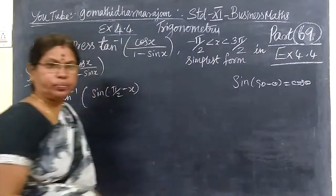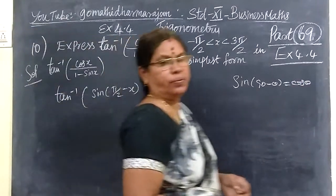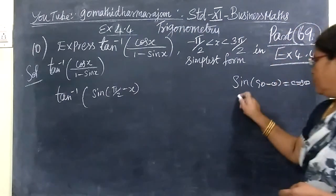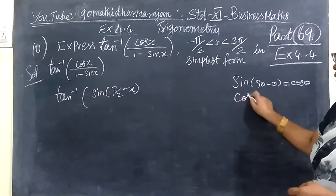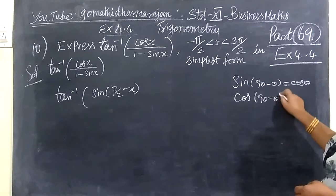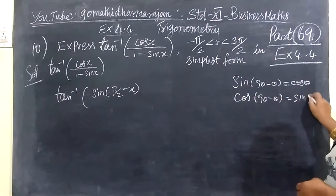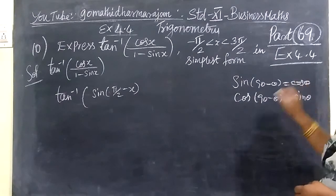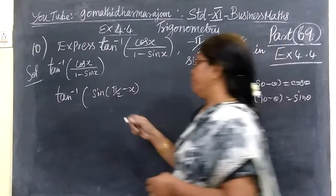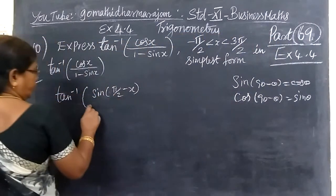Clear? That's not cos of 90 minus theta times theta. So here you write: cos of 90 minus theta, times theta. So this is a problem.